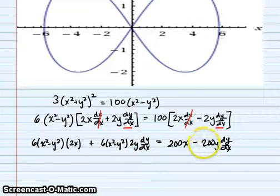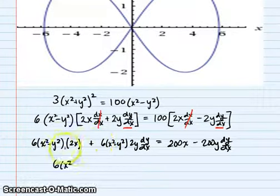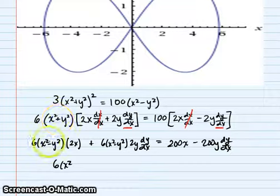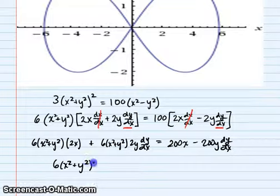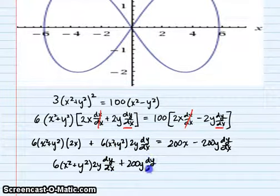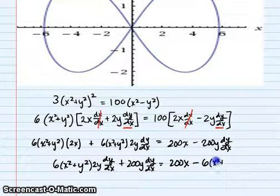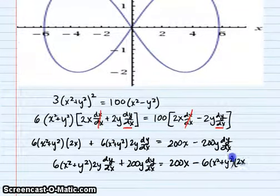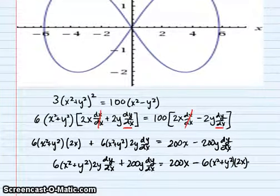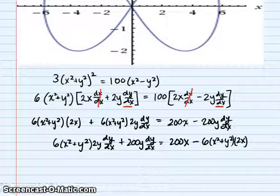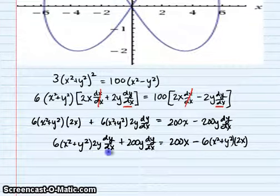We do the same thing as before — get our dy/dx terms on the left side and everything without dy/dx on the right side. So we get 6(x² plus y²) times 2y dy/dx plus 200y dy/dx equals 200x minus 6(x² plus y²) times 2x. We can see what's going to happen now — let's factor out the dy/dx to isolate it.